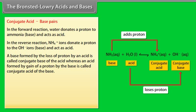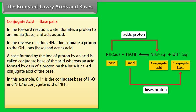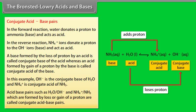An acid formed by gain of a proton by the base is called the conjugate acid of the base. In this example, OH⁻ is the conjugate base of H₂O, and NH₄⁺ is the conjugate acid of NH₃. Acid-base pairs such as H₂O/OH⁻ and NH₄⁺/NH₃, which are formed by loss or gain of a proton, are called conjugate acid-base pairs.